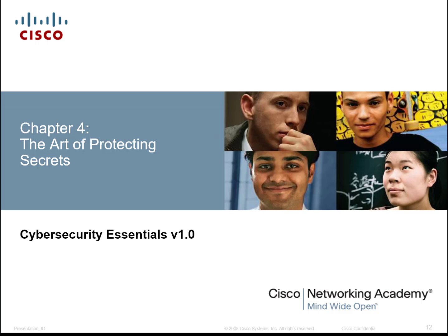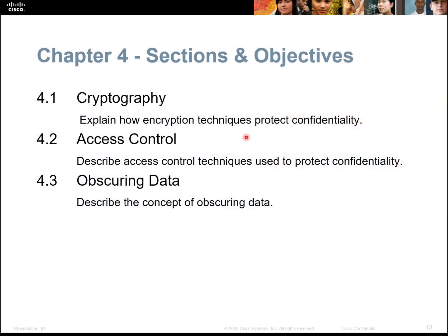Hi and welcome to another episode of Let's Talk About series. This one involves cybersecurity essentials and the art of protecting secrets. In this chapter we will be covering cryptography, access controls, and obscuring data. These are three very important ways of protecting your data — encrypting it, who can see it, and how to protect it from being seen.